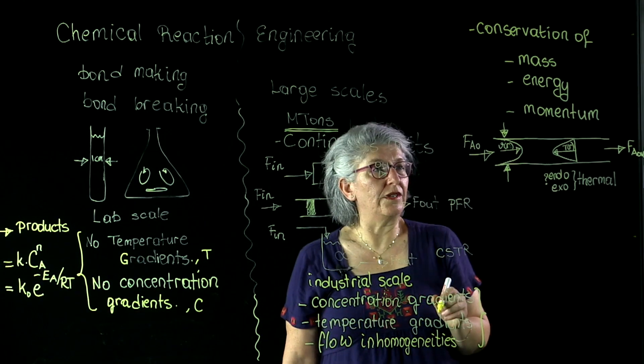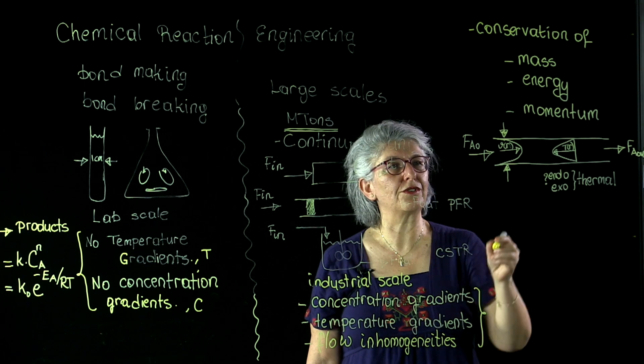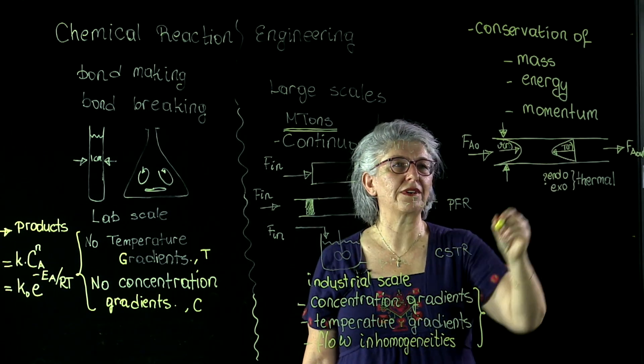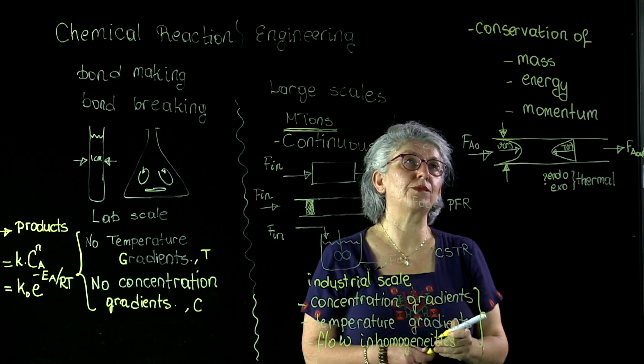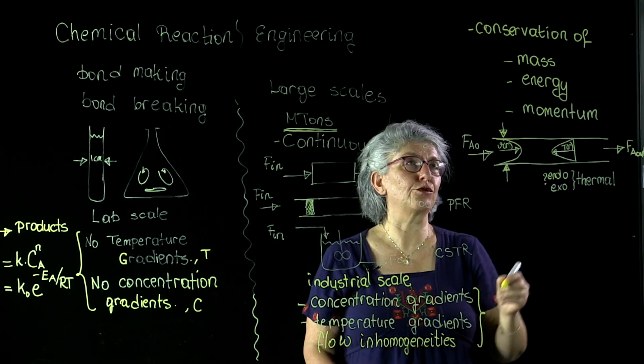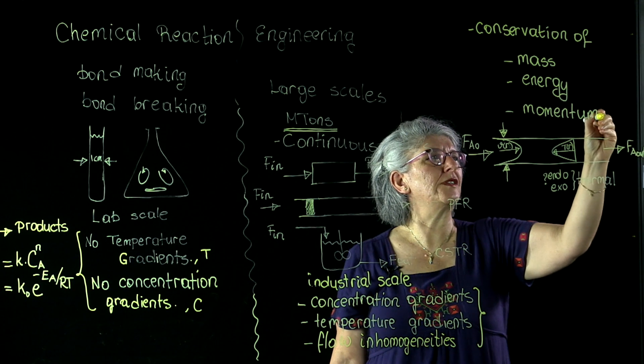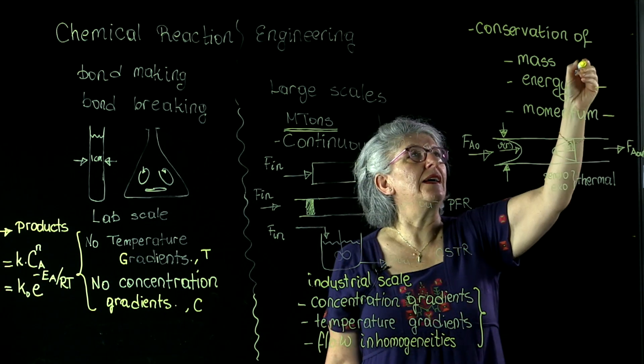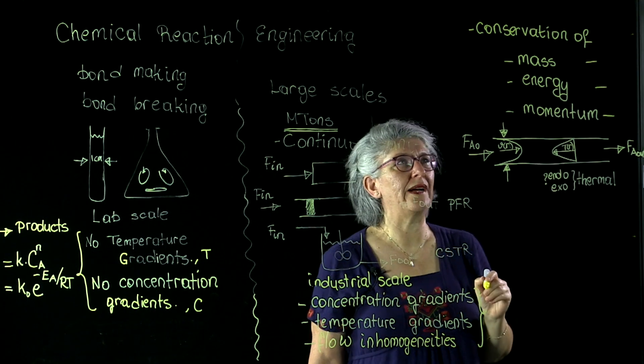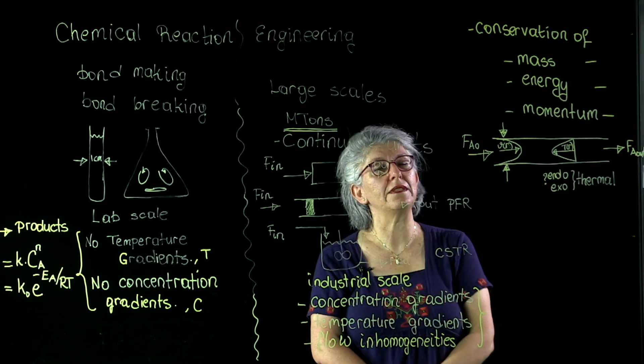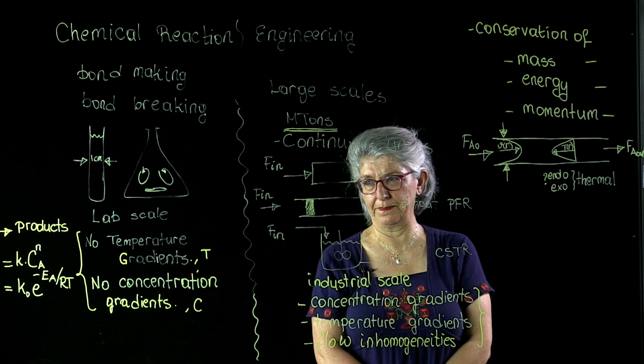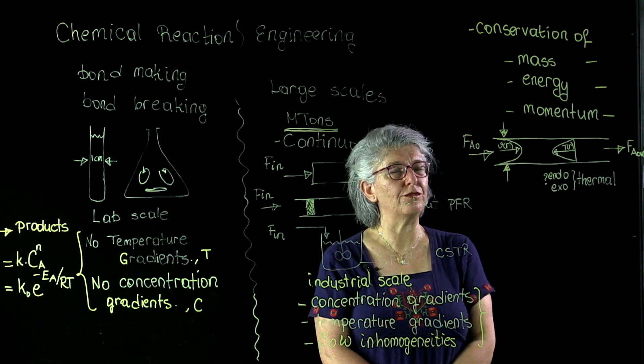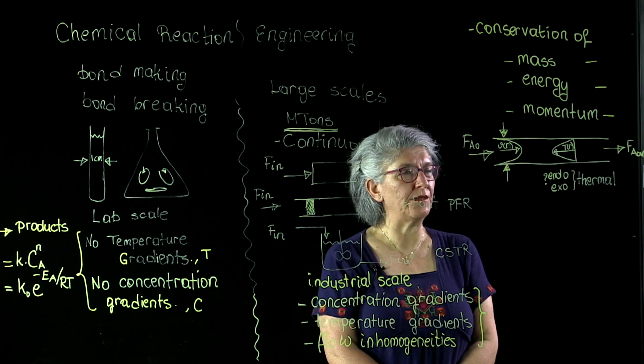So, if we are sure that we have velocity gradients and temperature gradients, it is important that we have to solve the momentum balance and the energy balance along with the mass balance or species conservation equation in order to have an accurate representation of the reactor behavior.